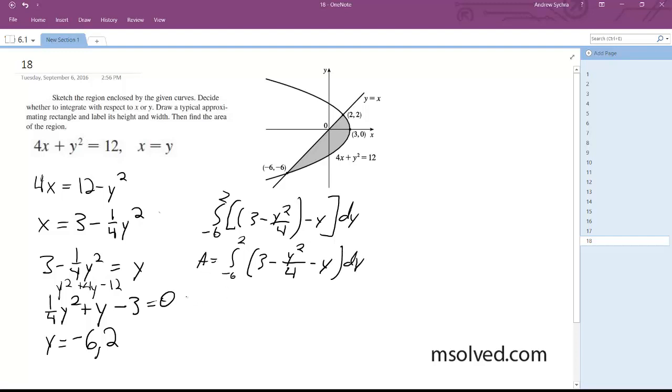Alright, integrate this. And we get 3y minus y cubed over 12 minus y squared over 2, negative 6 to 2.